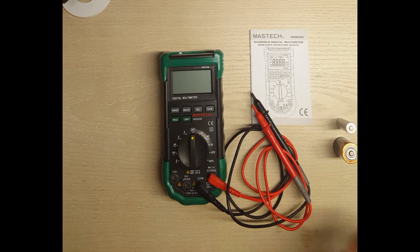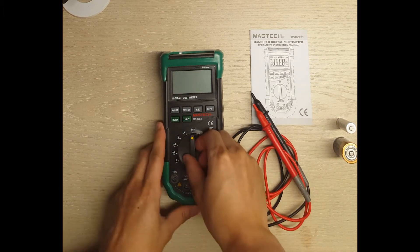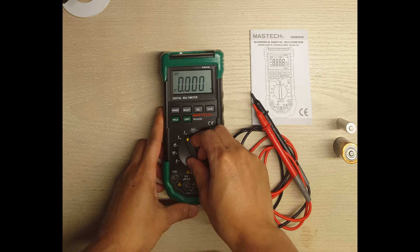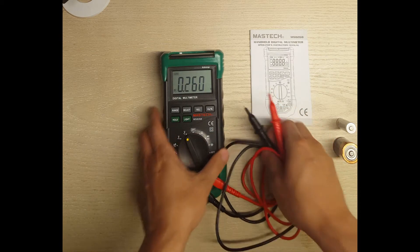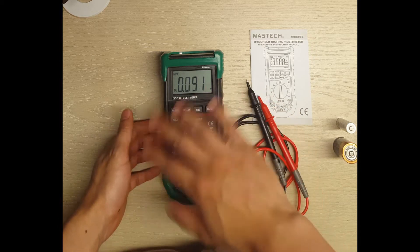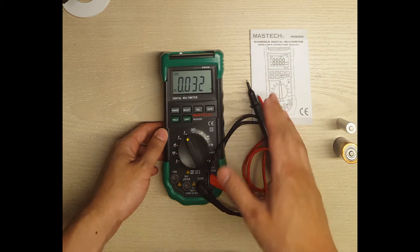This review is for the Dr. Meter Multimeter. What I like about this meter is a couple things. If you leave it on by accident, it will actually turn itself off after about five minutes.